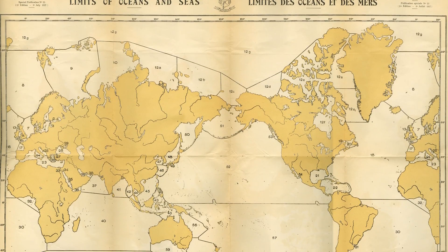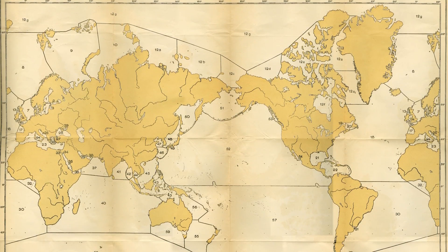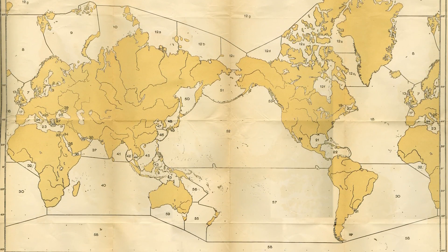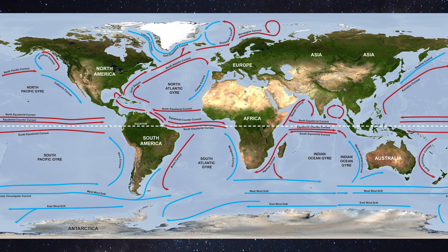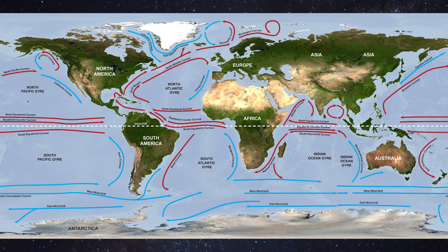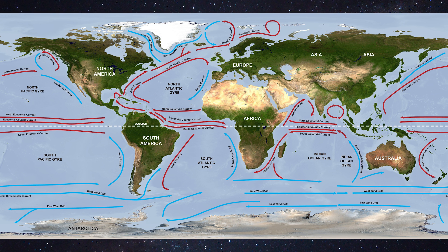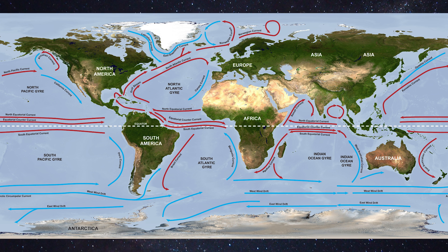Since the 1700s, there have been many allusions to some sort of Southern Ocean, and recently attempts have been made to formalize the Southern Ocean, given the importance of ocean currents. The Southern Ocean has the strongest and longest current in the world, which circumvents Antarctica.